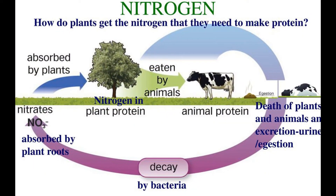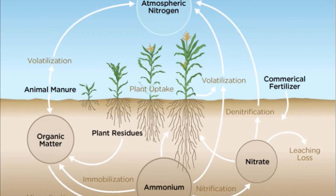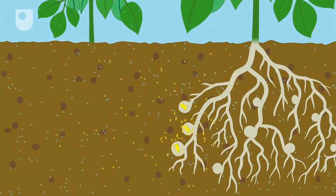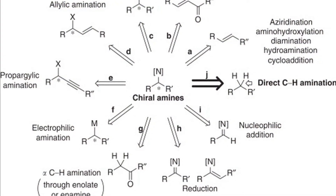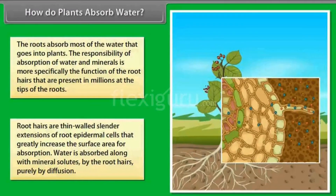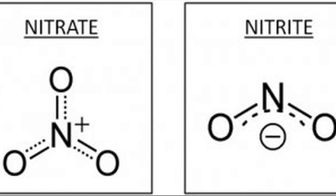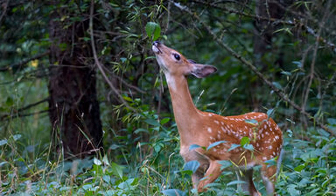The last cycle is the nitrogen cycle. Plants need nitrogen for making proteins. However, most plants cannot directly absorb the nitrogen from the air. Therefore, the nitrogen has to be fixed — that is, it has to be converted into soluble compounds of nitrogen that can enter the soil and then be absorbed by the plants. Nitrates and nitrites are some soluble compounds of nitrogen.